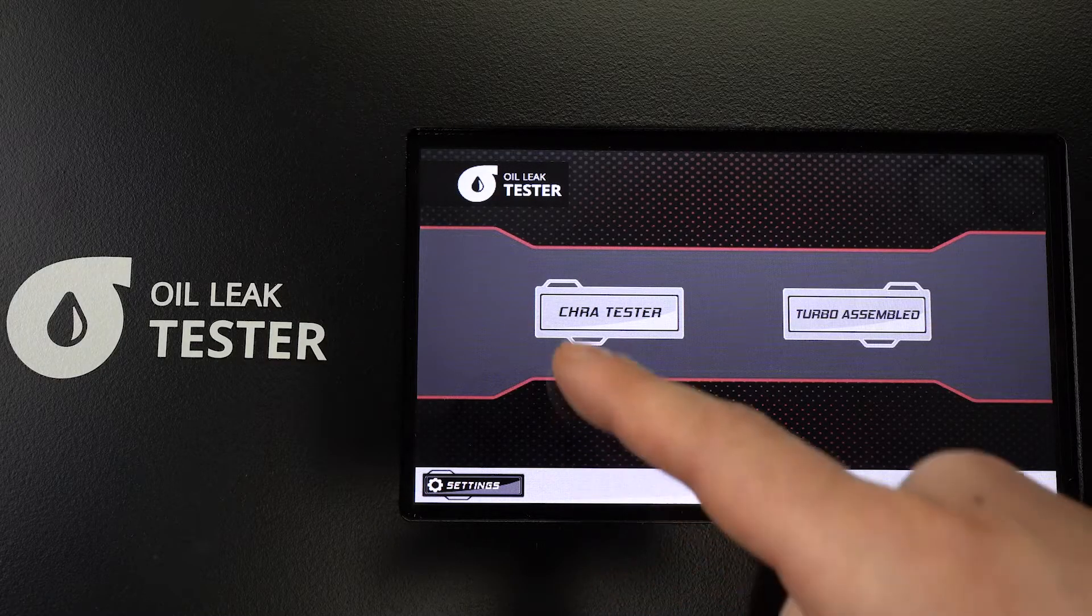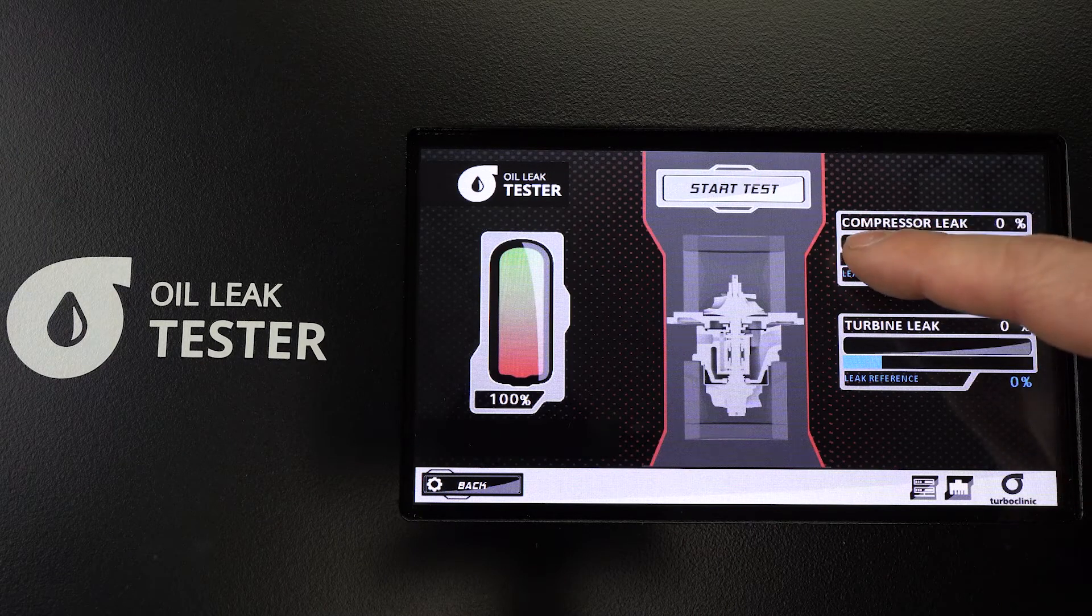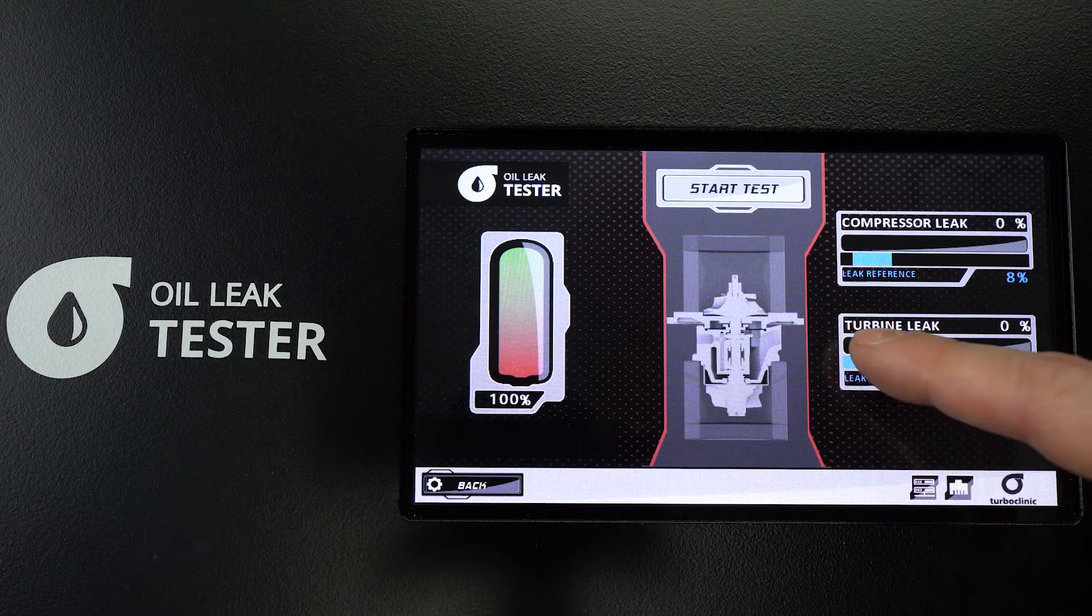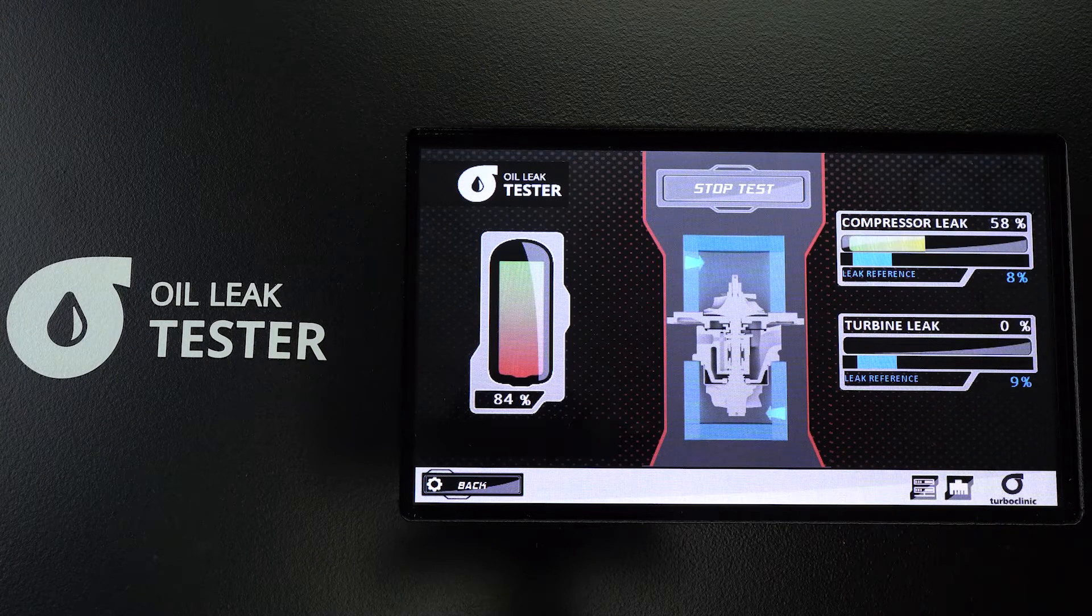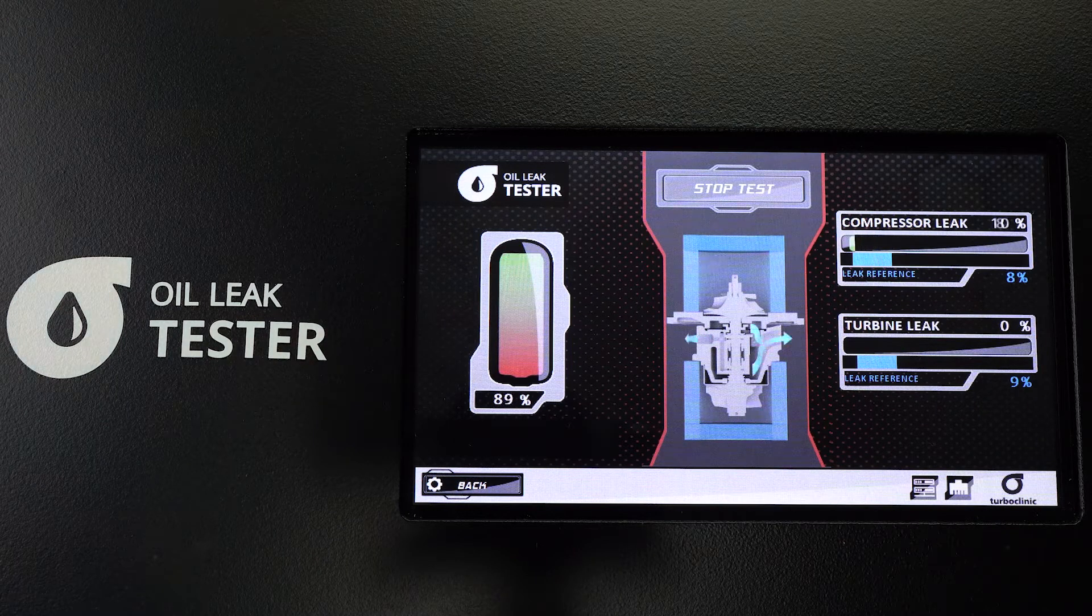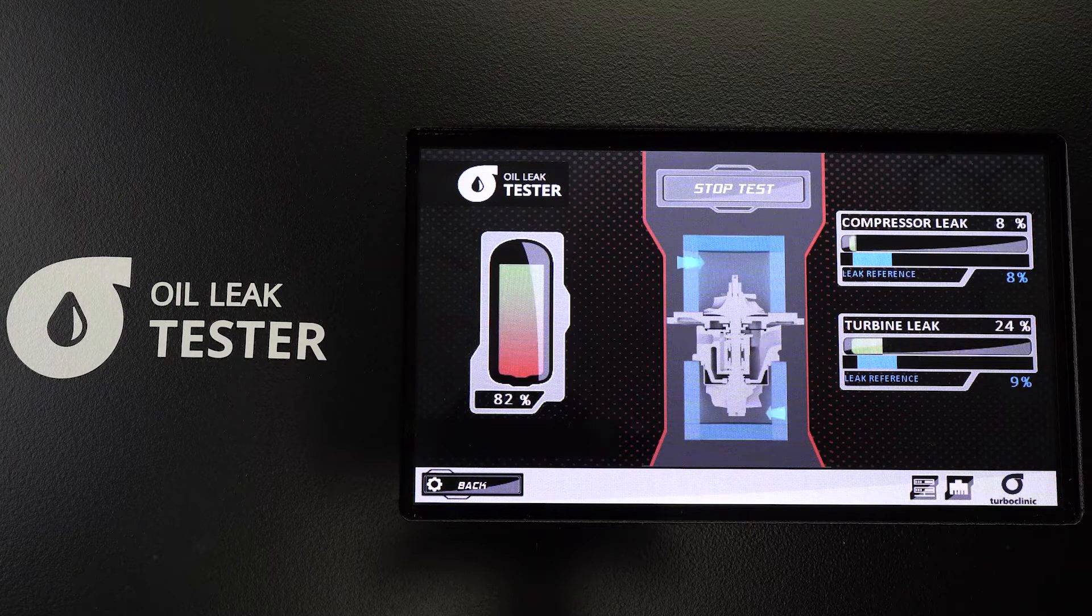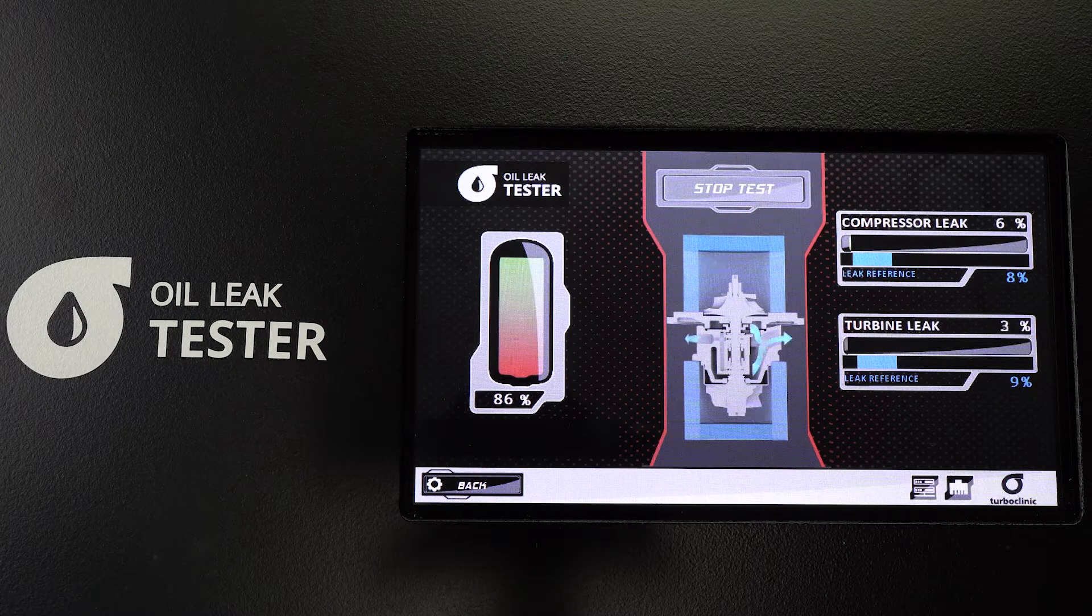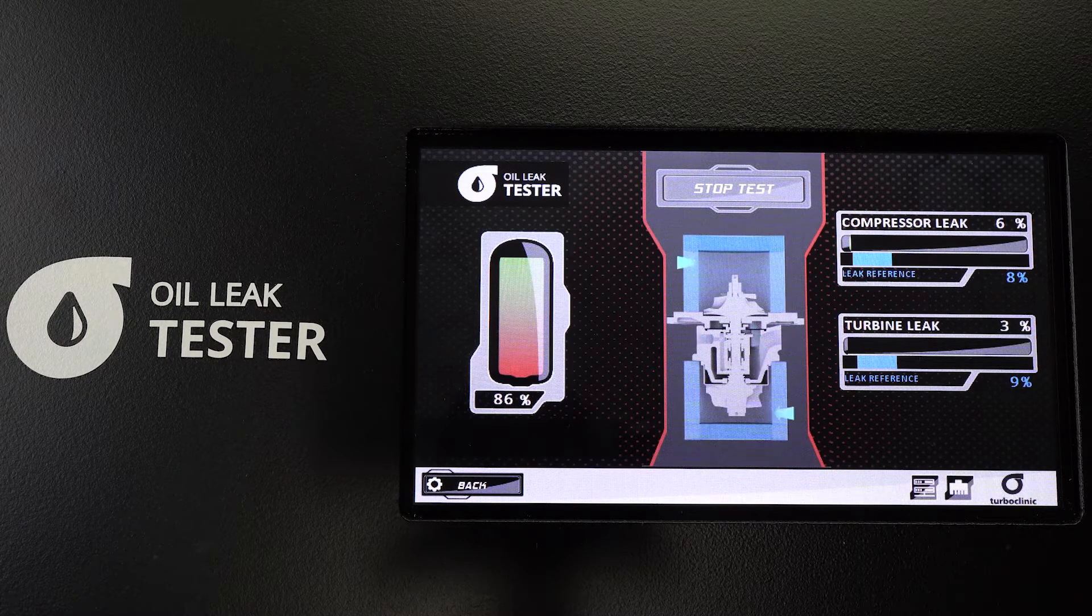Select Cartridge Tester. You can adjust the leak tolerance for both compressor side and turbine side. When you push on Start Test, air will flow in the compressor side and in the turbine side. At the end, you will have the value of Leak appearing from both sides.